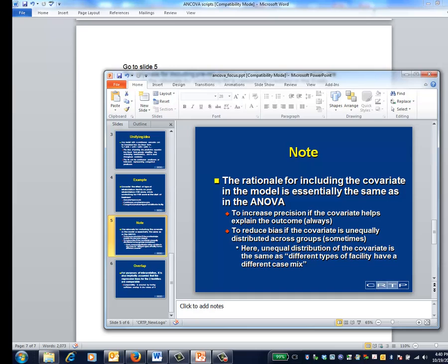Moreover, if the covariate is unequally distributed between the groups, for example, if patients entering one facility tend to have different levels of functional status than patients entering another, including the covariate in the model is necessary in order to avoid bias. In the lingo of outcomes research, the analysis of covariance is necessary in order to control for differences in case mix.